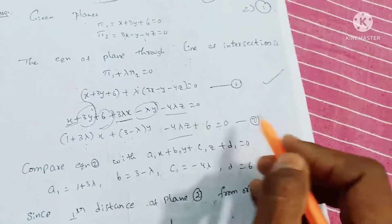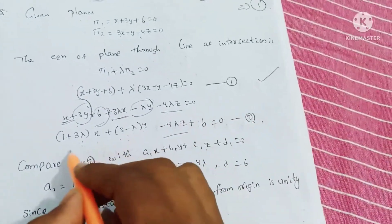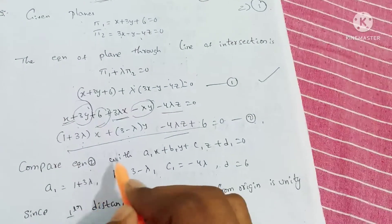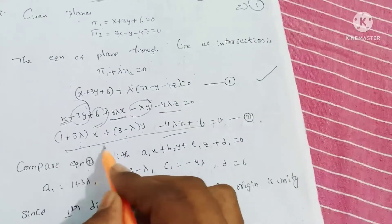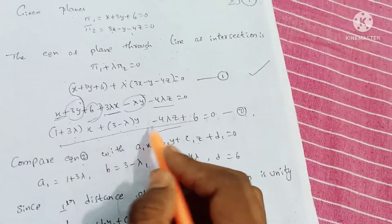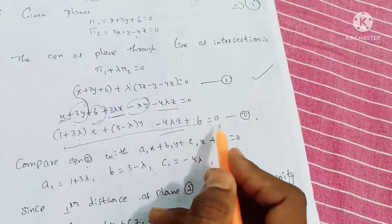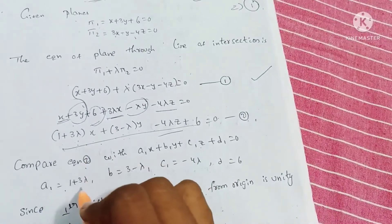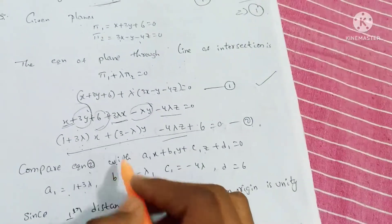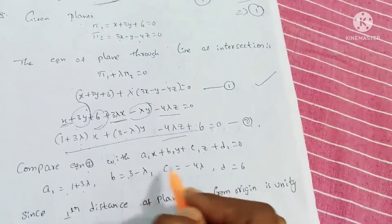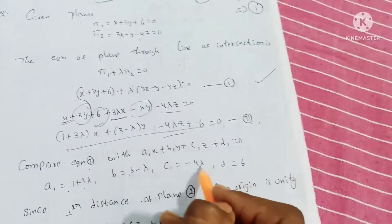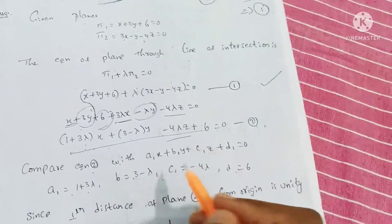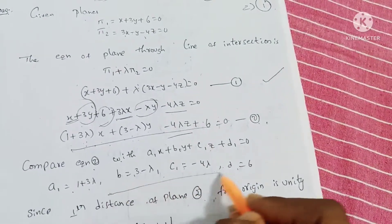We call this equation 2. Comparing equation 2 with Ax plus By plus Cz plus D is equal to 0: A equals 1 plus 3 lambda, B equals 3 minus lambda, C equals minus 4 lambda, D equals 6.